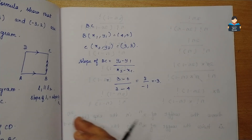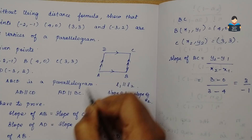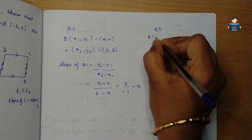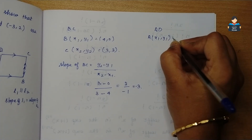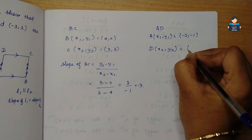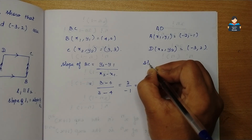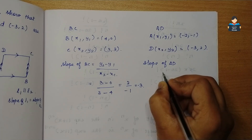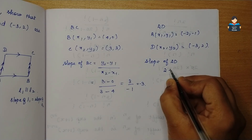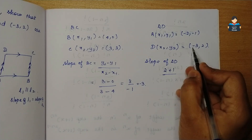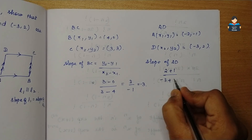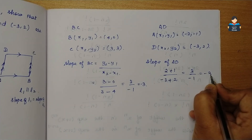Similarly, now we have AD. BC is equal to AD, so AD is parallel. A is x1, y1 equal to minus 2, minus 1, and D is x2, y2 equal to minus 3, 2. Slope of AD: y2 minus y1 is 2 minus of minus 1 which is plus 1, and x2 minus x1 is minus 3 minus of minus 2 which is plus 2. So 3 by minus 1 which is minus 3.